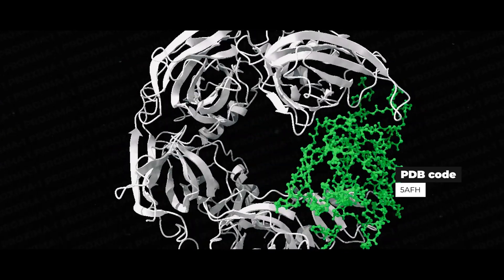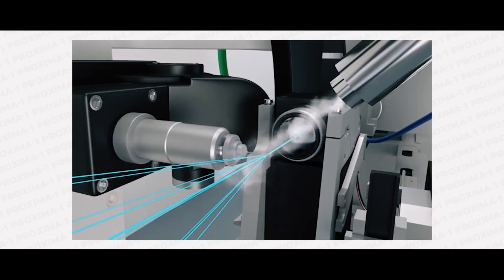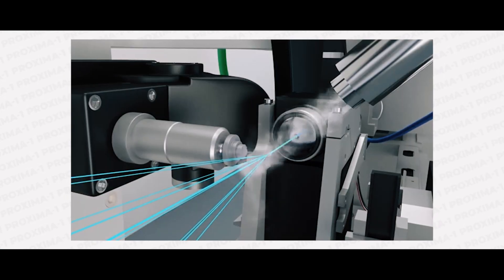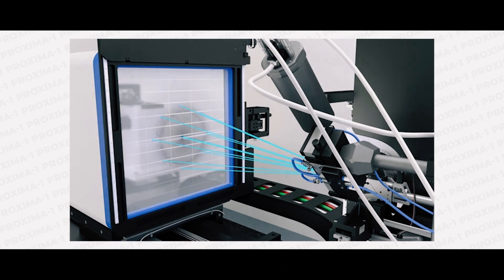The Proxima 1 beamline at the synchrotron Soleil uses hard X-rays to record diffraction images from which the structure of the molecules inside the crystal can be reconstructed.